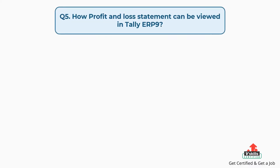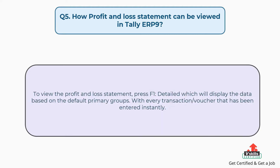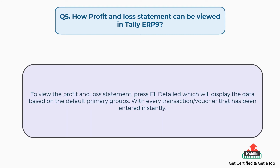Question number five: how can the profit and loss statement be viewed in Tally ERP9? To view the profit and loss statement, press F1 detailed, which will display the data based on the default primary groups, with every transaction or voucher that has been entered instantly.